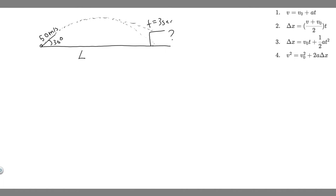Delta x is the change in how far it goes in the x direction, and delta y is how high it lands. When solving two-dimensional kinematic problems like this, you want to draw out the given values in the x direction and in the y direction.